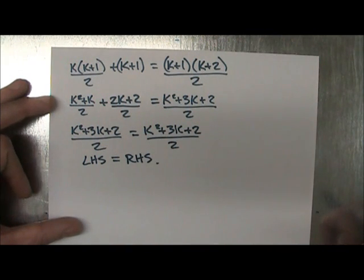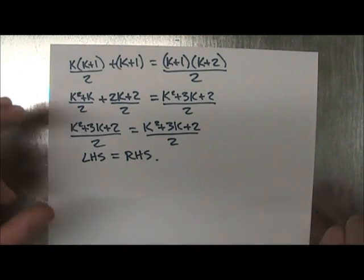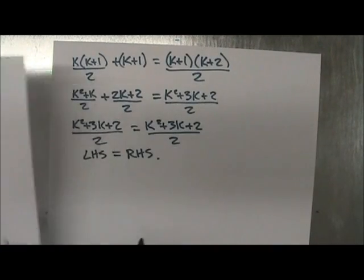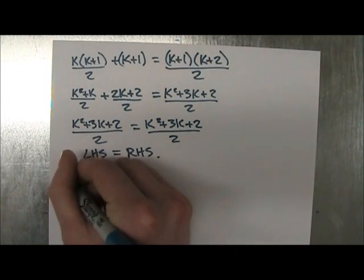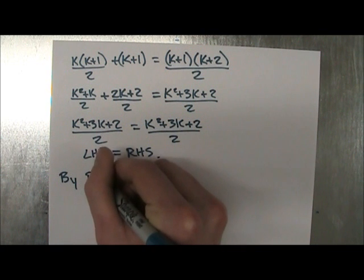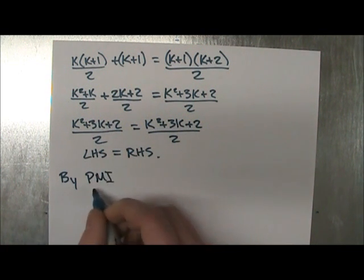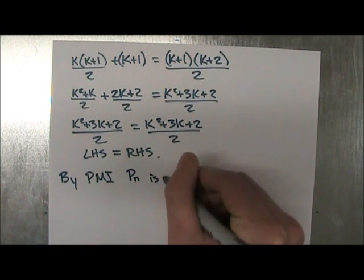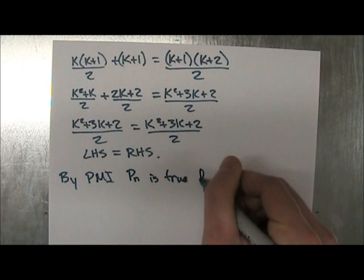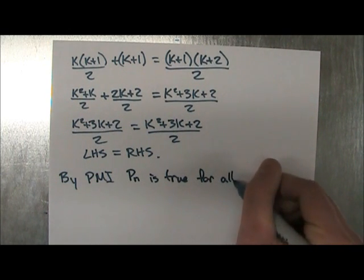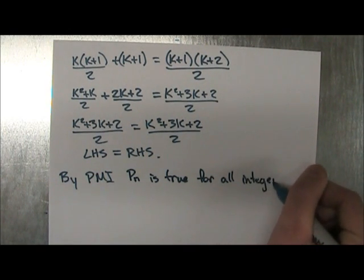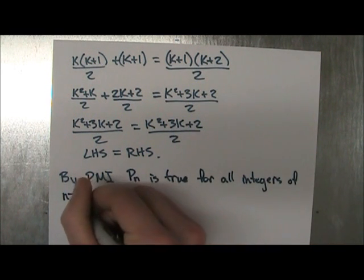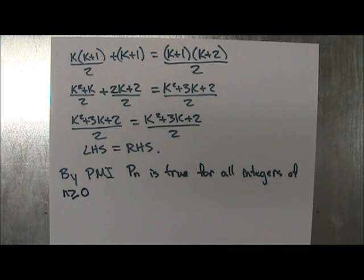And because of this, you just proved that it's true so you know that your Pn is also true. So you're done. All you have to do is write by PMI, which stands for the Principle of Mathematical Induction. Pn is true for all integers of n greater or equal to 0. And that's all there is to it.